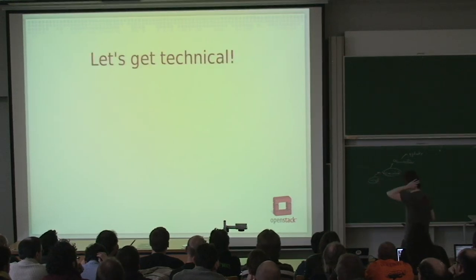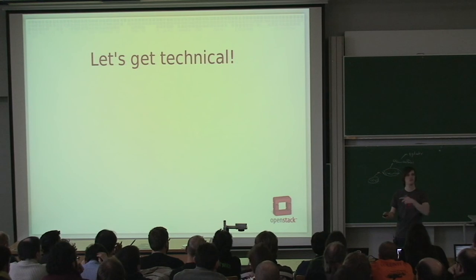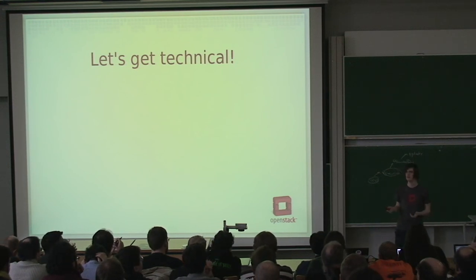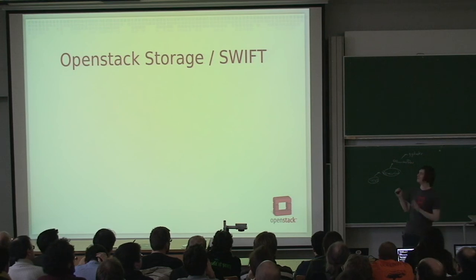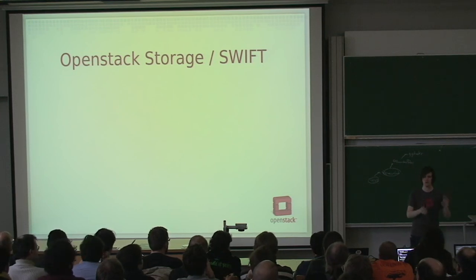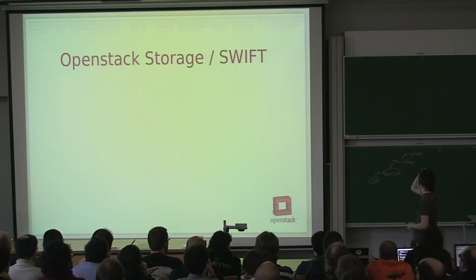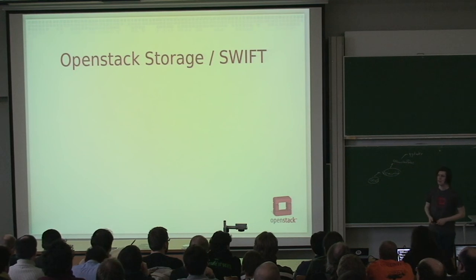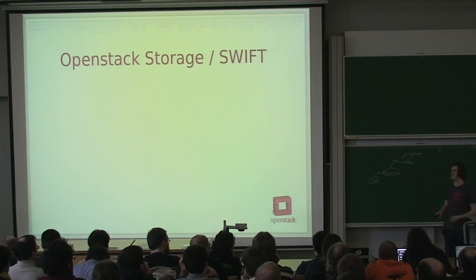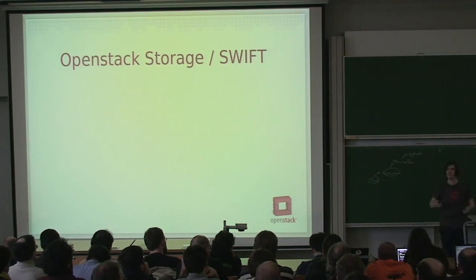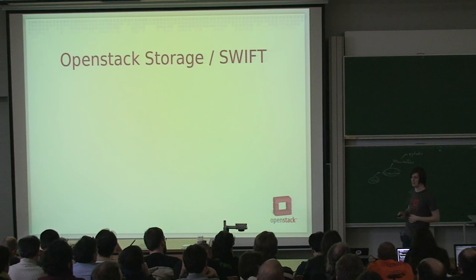Let's get technical. There are two major components to OpenStack. The first one we'll speak about is Swift — OpenStack Object Storage, codenamed Swift. Swift is remarkably simple — not simple as in primitive or crude, but simple in the way that sometimes when you're looking at a reasonably complex problem you have an epiphany and a solution reveals itself to be really obvious, really simple, and really correct all at the same time. That's kind of what Swift is.